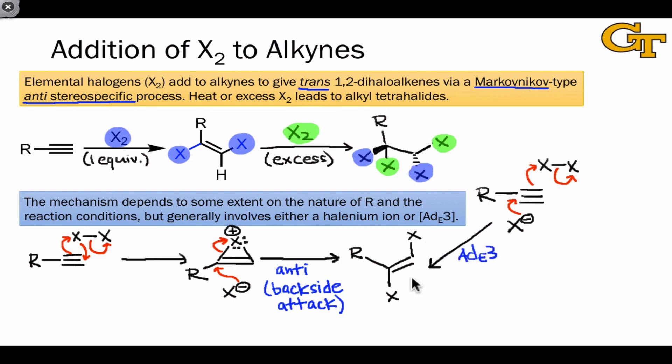No matter the mechanism, the important point in halogenations of alkynes is that the two X atoms add across the alkyne in a trans or anti fashion, giving rise to trans-1,2-dihalo alkene products.